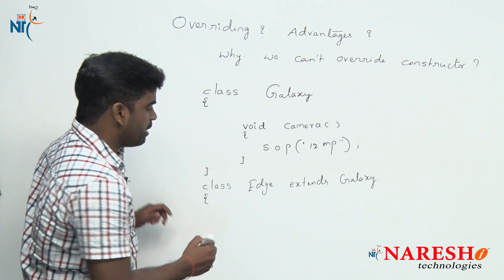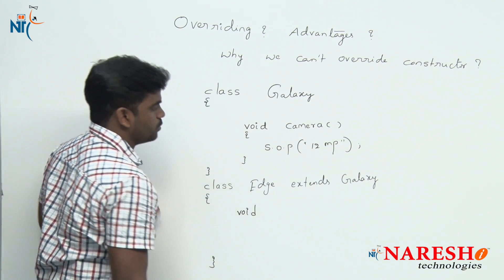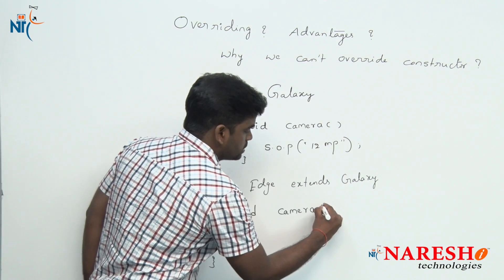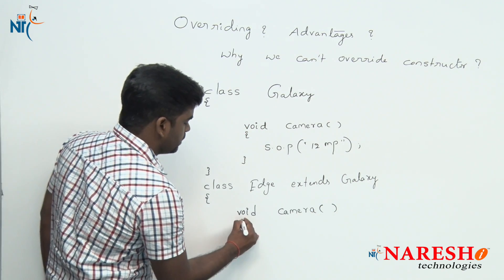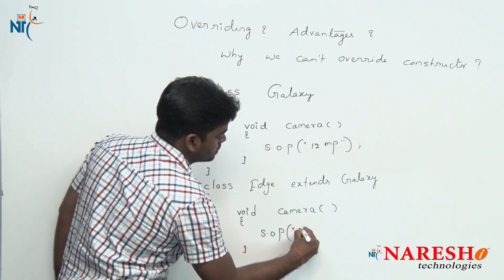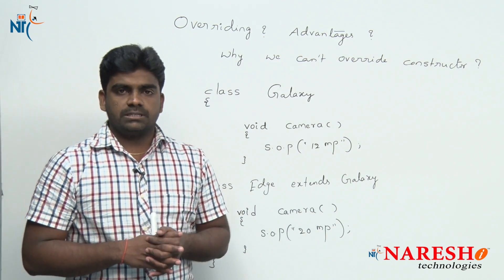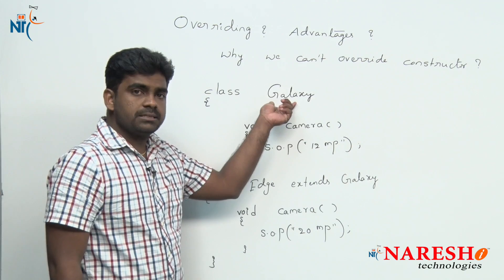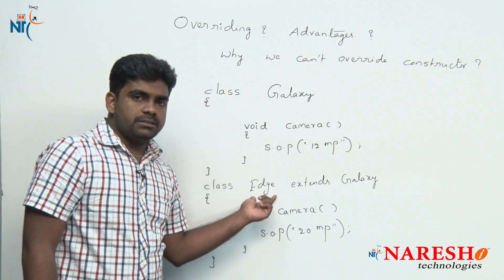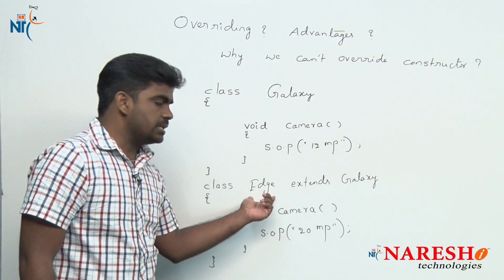Now, what is method overriding means — defining a method here. The return type is void, method name is 'camera', and it is not taking any argument — same signature. And here we are just rewriting the logic: System.out.println — this is a 20-megapixel camera. Definitely they will ask the question: in the parent class, the functionality is already available. As we extended from the Edge class, you can access that camera functionality in the Edge class also.